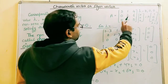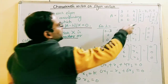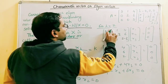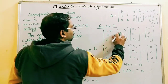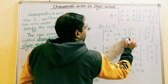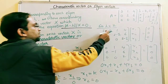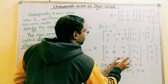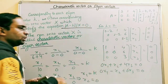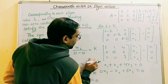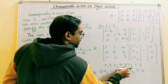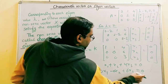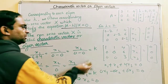Now let's calculate the second eigenvector for lambda equals 2. We replace lambda with 2 in the matrix: 3-2=1, 2-2=0, 5-2=3. The two equations become X1 + X2 + 4X3 = 0, and 0·X1 + 0·X2 + 3X3 = 0, which is again a trivial solution.